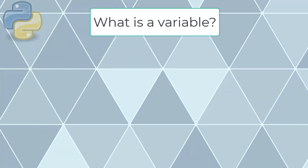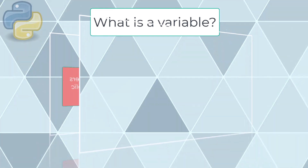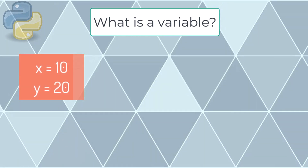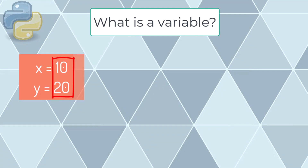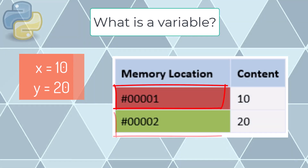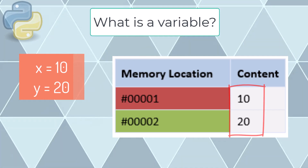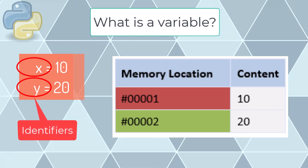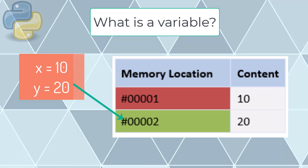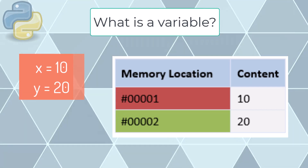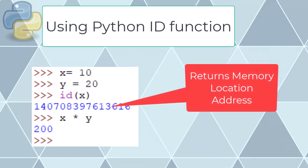What is a variable? A variable stores a temporary value in the computer's memory and is referenced by a symbolic name. We name variables and assign them values — for example, x = 10 and y = 20. This creates two locations in memory storing those values. The variable names x and y are called identifiers, linked to corresponding memory locations. In Python you can get the memory location of a variable using the id() command.